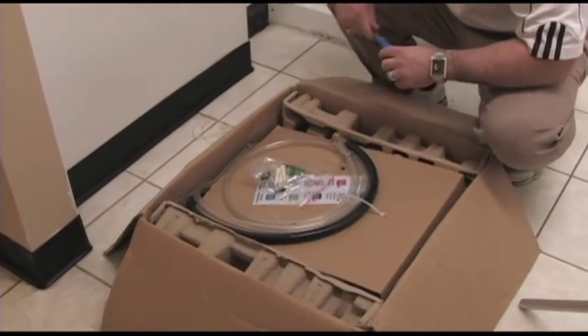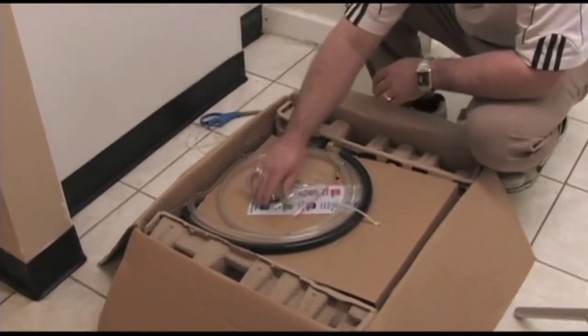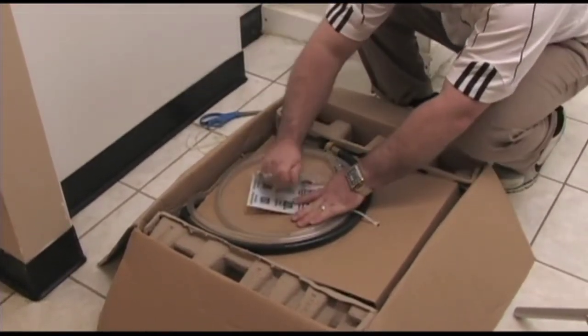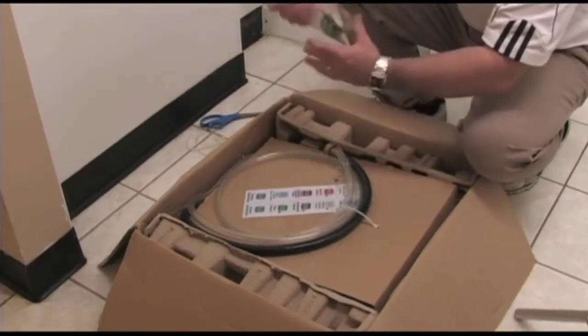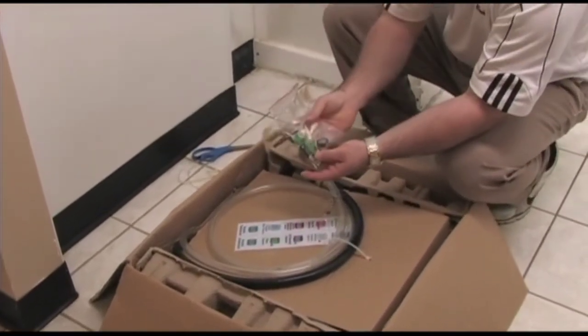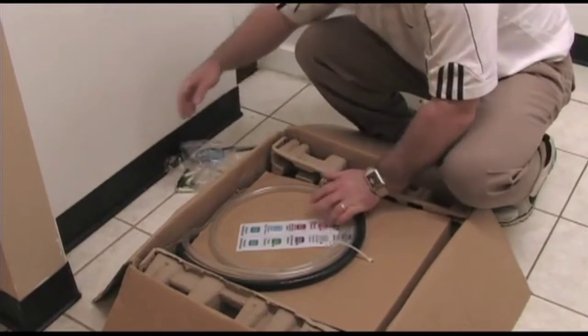Open the eco-proportioning box and ensure that all materials are available. The box should contain one eco-proportioning system, one parts bag, one instruction pamphlet and two sheets of product decals.